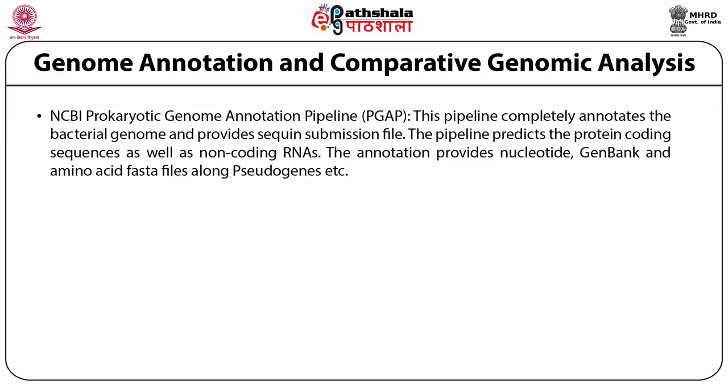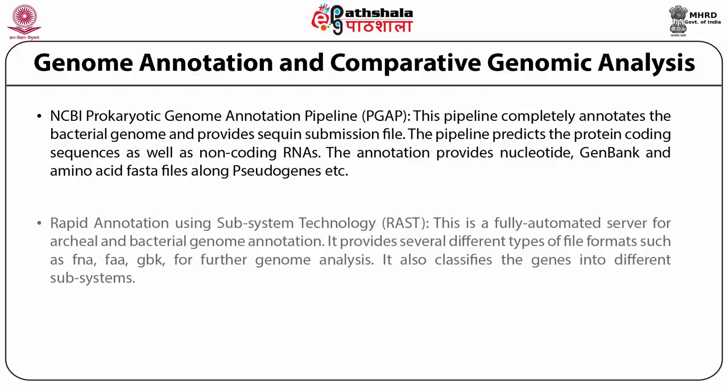The NCBI prokaryotic genome annotation pipeline (PGAP) completely annotates the bacterial genome and provides a sequence submission file. The pipeline predicts protein coding sequences as well as non-coding RNAs. The annotation provides nucleotide, GenBank and amino acid FASTA files along with pseudogenes. The rapid annotation using subsystem technology (RAST) is a fully automated server for archaeal and bacterial genome annotation. It provides several file formats such as FNA, FAA, and GBK for further genome analysis, and also classifies genes into different subsystems.